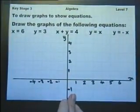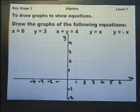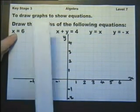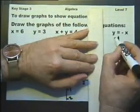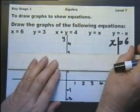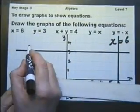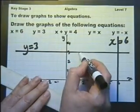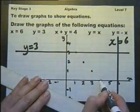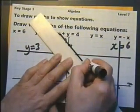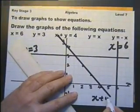To draw graphs to show equations. Now, certain graphs you should be able to draw just straight away, and others you have to work out. These we should be able to draw. We should know that x equals 6 goes straight down the page through x equals 6. Let's label that. We should know that y equals 3 goes straight across the page through y equals 3. So, let's label that. We should know that x plus y equals 4 goes through the coordinates that add up to 4. 4 plus 0, 1 plus 3, 2 plus 2, etc. will add up to 4. So, that is x plus y equals 4.